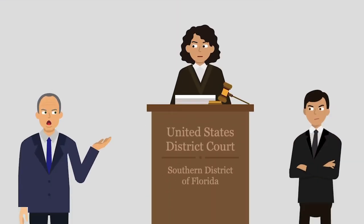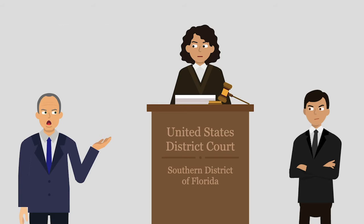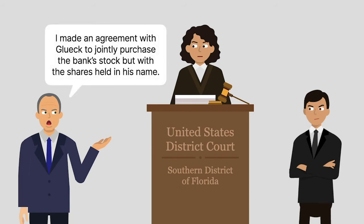William Haas, an Ohio resident, sued in federal court to force Jefferson National Bank — or the bank for short — a Florida resident, to issue him certain shares of its common stock. He alleged that he made an agreement with Charles Gluick, an Ohio resident, to jointly purchase the bank's stock, but with the shares held in Gluick's name.